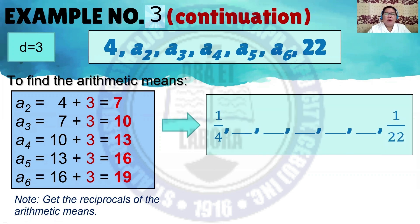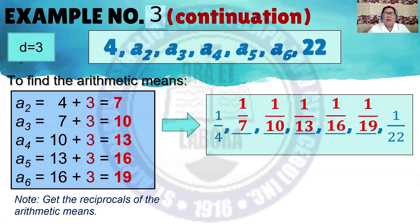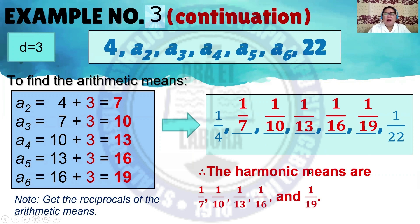Get the reciprocals of the arithmetic means. Next to 1/4 is 1/7. Next is 1/10. Next is 1/13. Next is 1/16. Next is 1/19. There you have inserted 5 harmonic means. Therefore, the harmonic means are 1/7, 1/10, 1/13, 1/16, and 1/19.